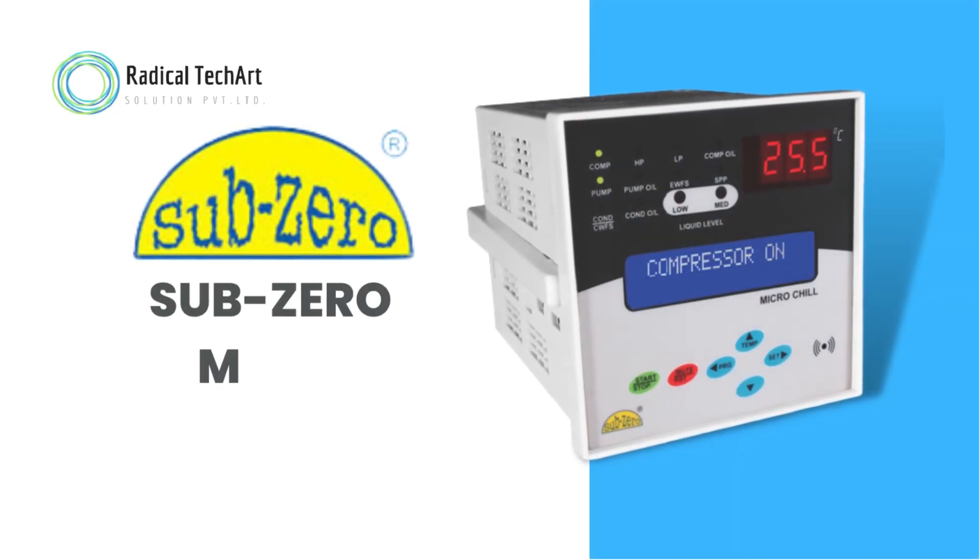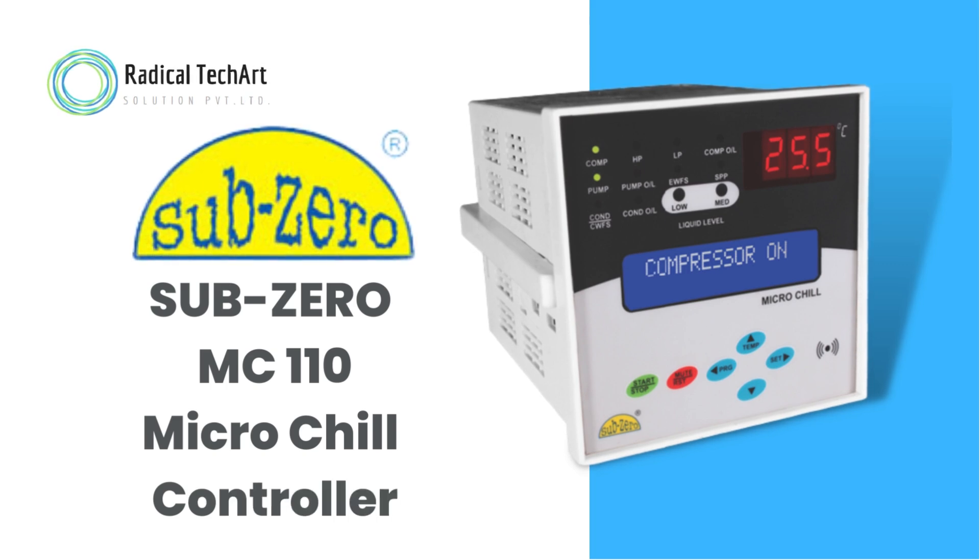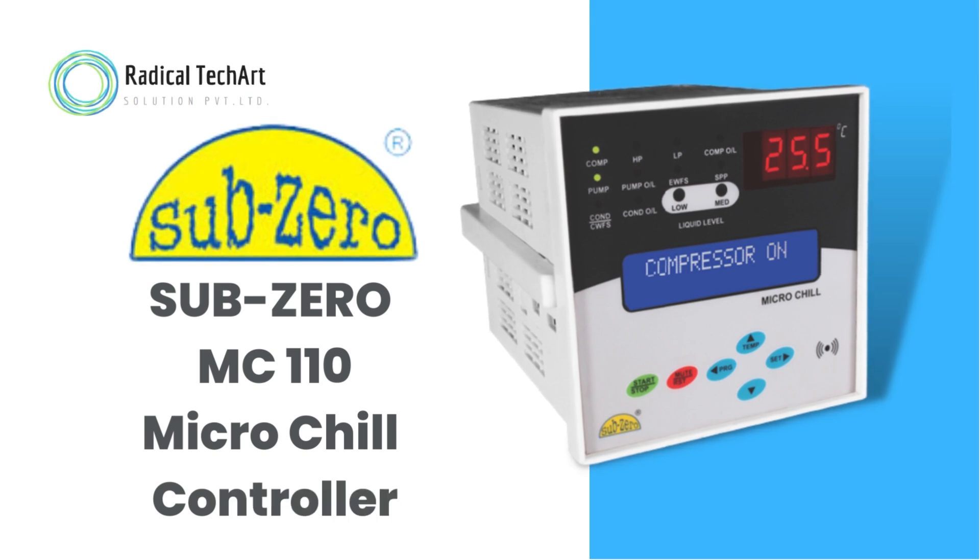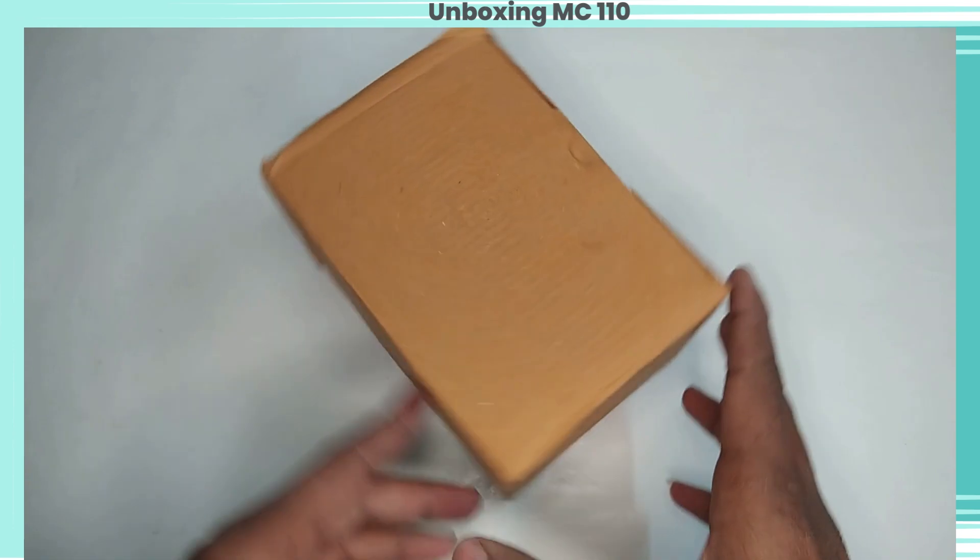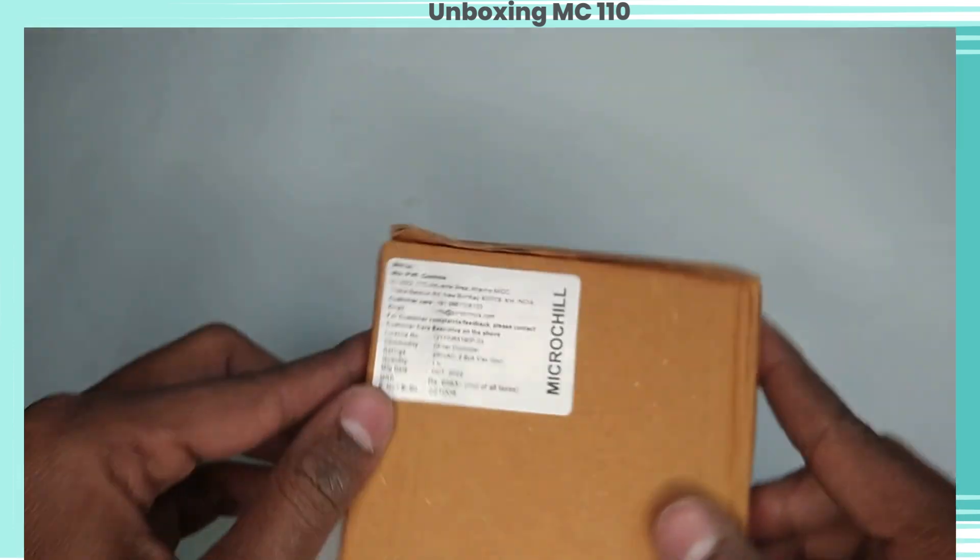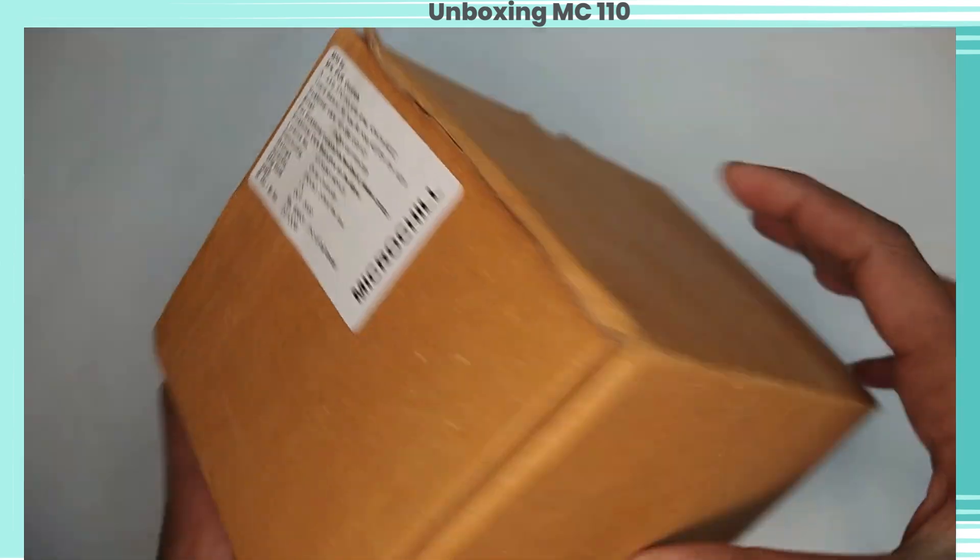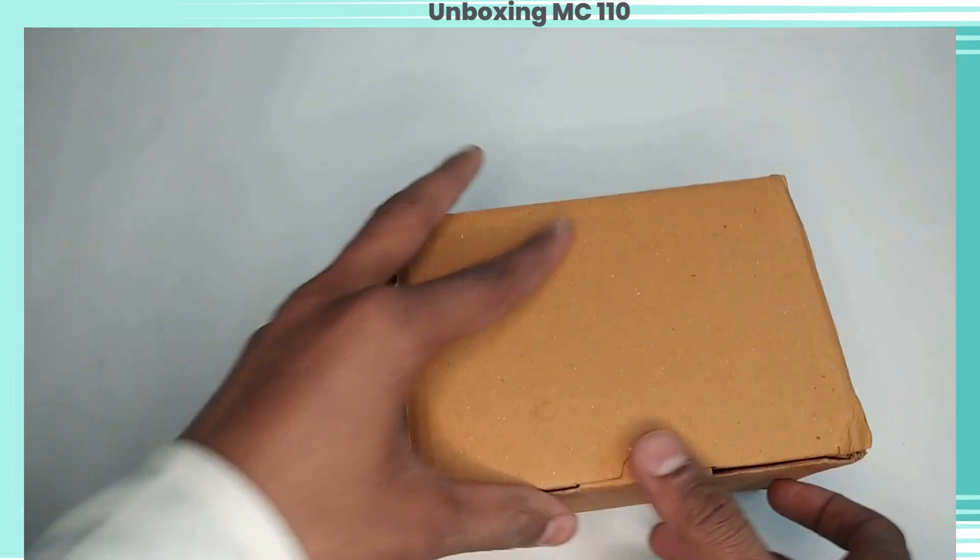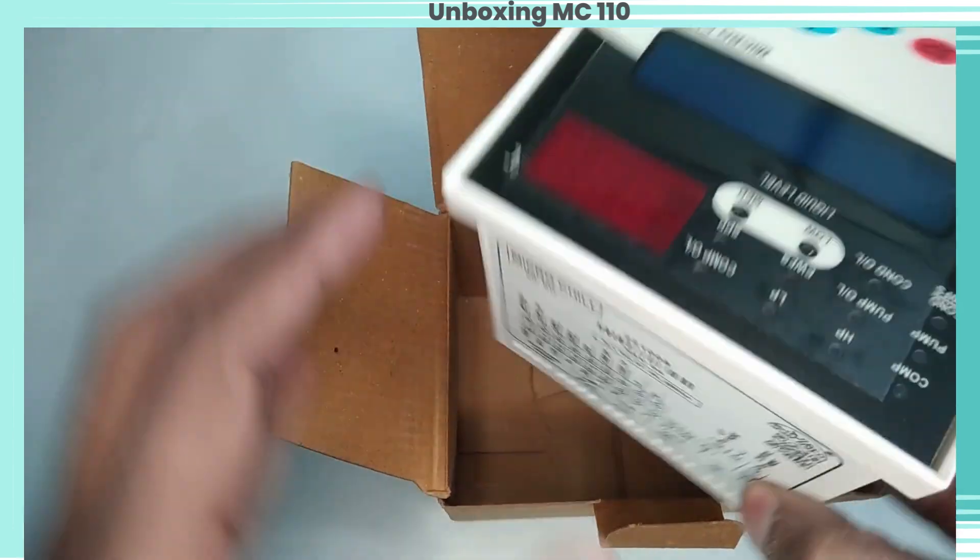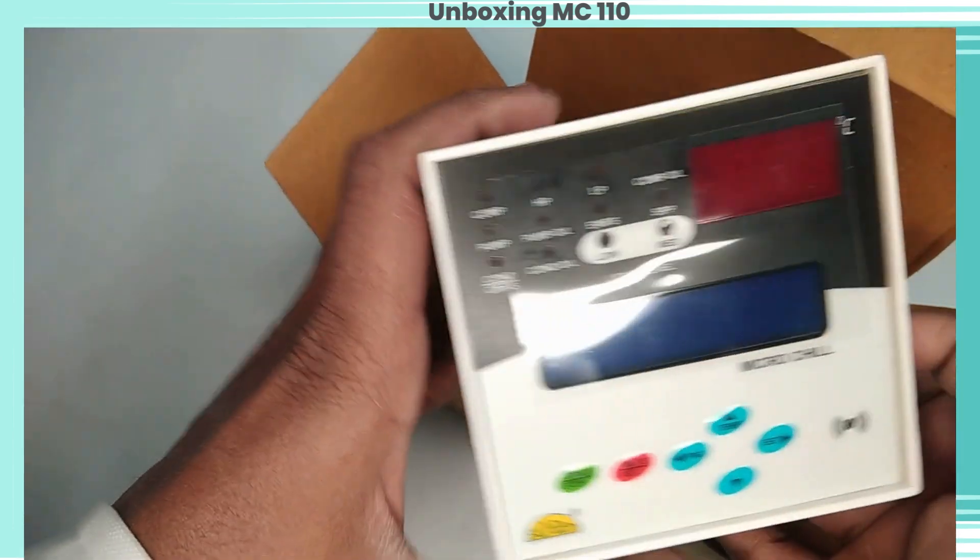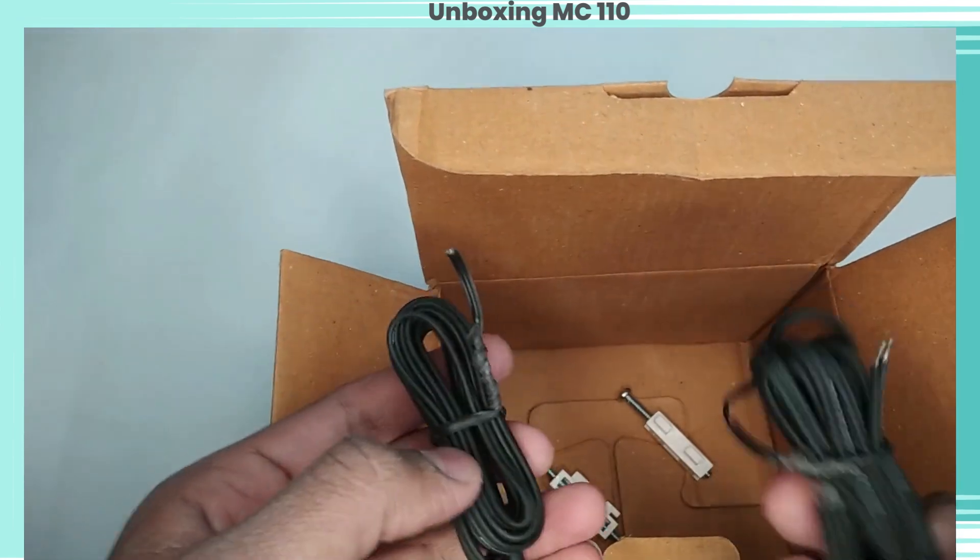Hello friends, welcome back to our channel. Today we are going to discuss the Subzero MC 110 Microchill Controller. Now let's do unboxing of the controller. On the box side, a sticker has all the information available. Let's open this box. We can see we have one Subzero Microchill Controller, two temperature sensors, panel mount clamps, two pieces - so total five units in one box.